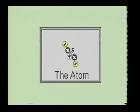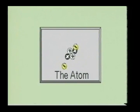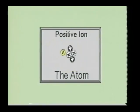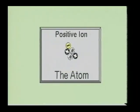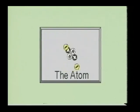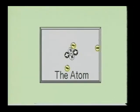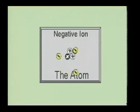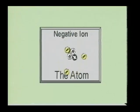It is possible to dislodge one or more electrons from most atoms. This causes the atom to have a positive electrical charge, and it is then called a positive ion. On the other hand, if a stray or free electron combines with a neutral atom, the atom will have a negative electrical charge. It is then called a negative ion.